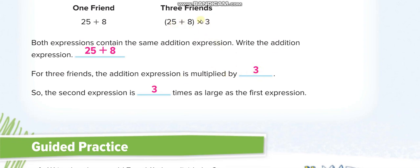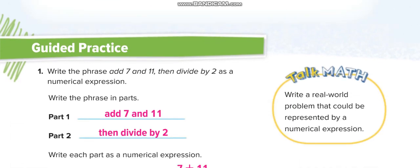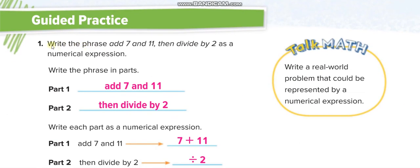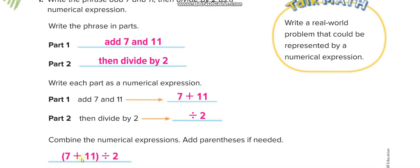Here, write the phrase add 7 and 11, then divide by 2. Add 7 and 11, so first thing, 7 and 11, then divide by 2. Then divide by 2. Why we put the parenthesis? If we don't put the parenthesis, then we have to divide first according to the order of operation rule. Because the order of operation rule says divide and multiply first, and then addition and subtraction.